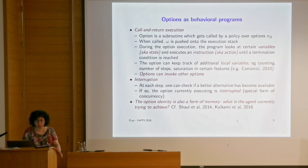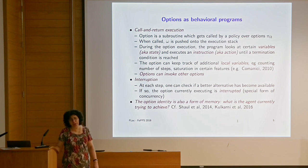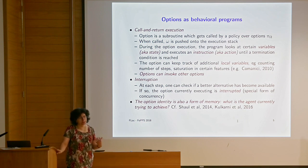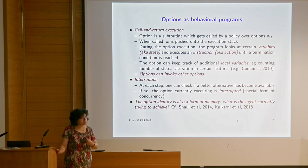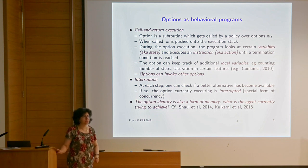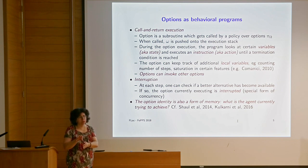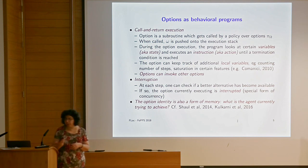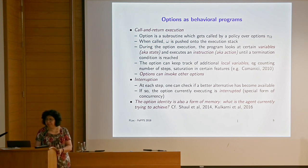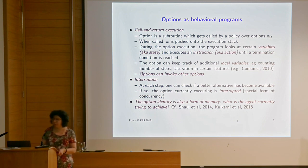We can also add interruption: as the agent proceeds and observes the state, perhaps something better becomes available. You're walking to work, you notice a bakery with fresh croissants—you don't want to go all the way to your office and come back; you just want to interrupt the current behavior, do the action, and continue. Interruption allows us to do that. Also, remembering the option identity is a form of memory about what we're trying to achieve, not about the past.